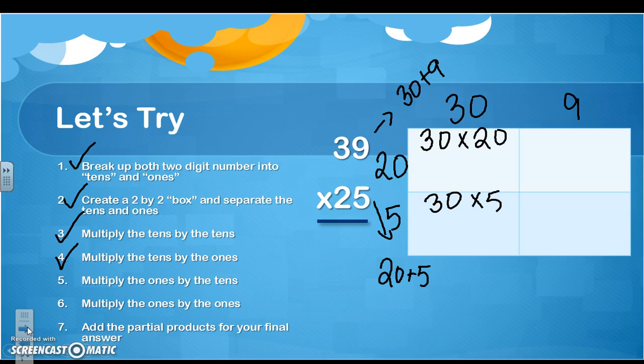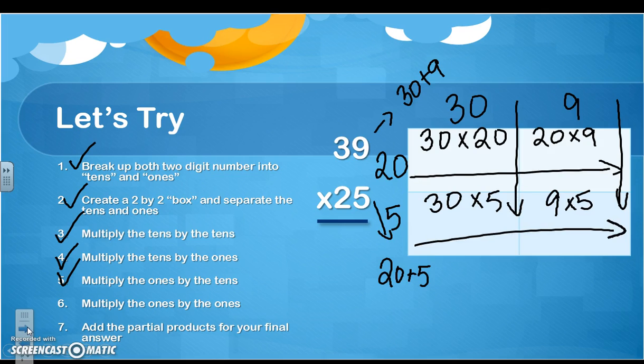and ones by the ones, 9 times 5. So if you see, we're just going straight down or straight across with our numbers. We're not going diagonal at all here.